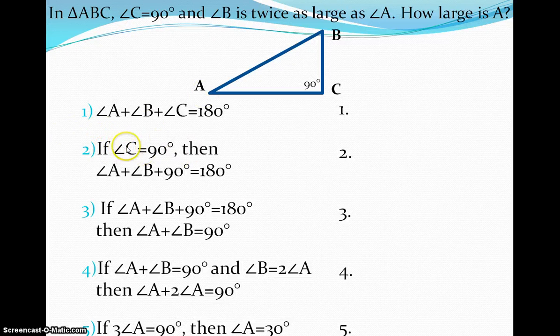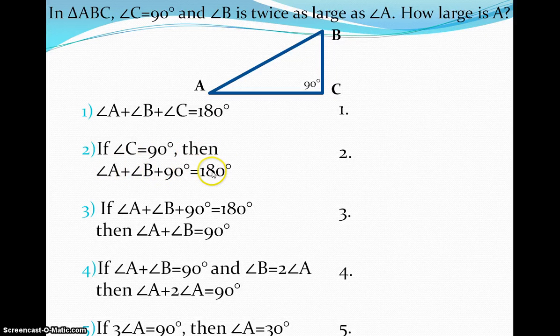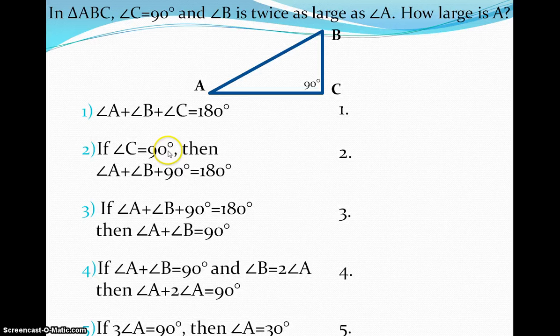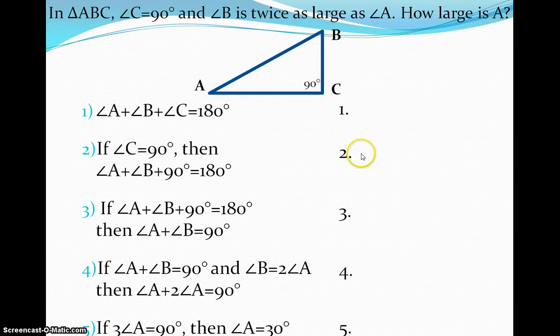Now if angle C is equal to 90 degrees, then angle A plus angle B plus 90 degrees is equal to 180. And so we're using this statement up here, and we're saying, okay, that these two things are equal to each other, so why can I all of a sudden just plug in and replace angle C with 90? So again, think back to what I just said in the video earlier. I have an A is equal to B. What did I do? And I want you to put that property or that theorem over here in number two.